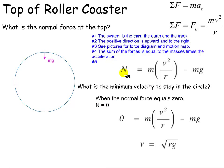So the minimum velocity happens when there's no normal force. So in this equation, I'd replace the N with a zero, and I'd have to know how to solve that equation for V. So make sure you can do that.